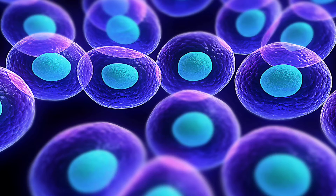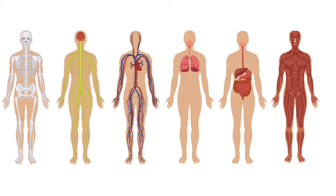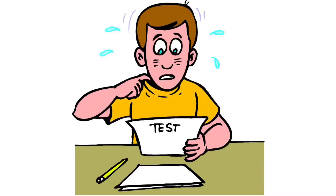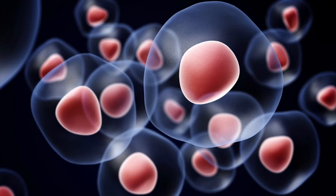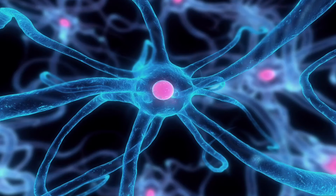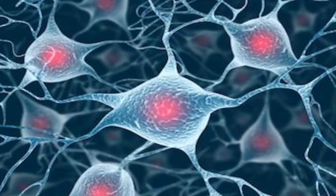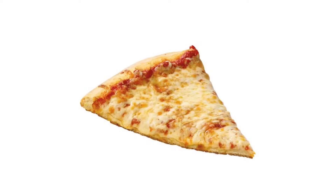You have lots of cells, but they all don't do the same job. Your body must carry out many different life processes, from digesting food to thinking about your science question. Each process requires cells that are specialized for that process. For example, a brain cell does not digest the nutrients in a slice of pizza.